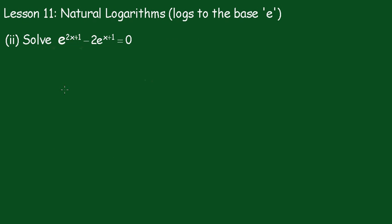We're going to solve this exponential equation: e^(2x+1) - 2e^(x+1) = 0. Now I'll just rearrange that a little bit and we'll write that as...